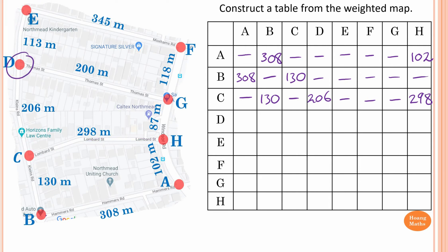From vertex D: D to A, no direct connection. I'll work on D to G first — the direct connection from D to G is 200. Then D to C is 206. And D to E is 113. The rest of the vertices have no direct connection with D, so leave them blank.